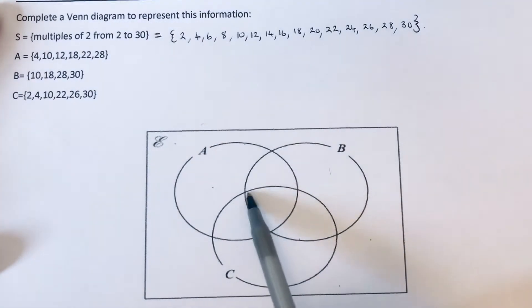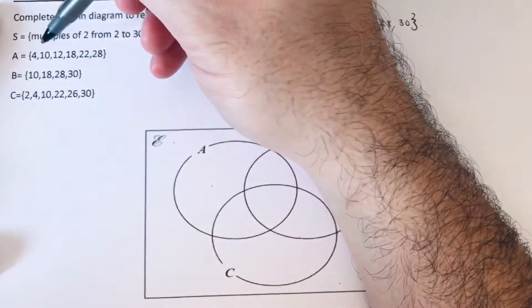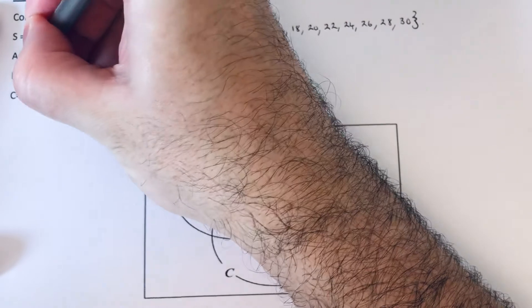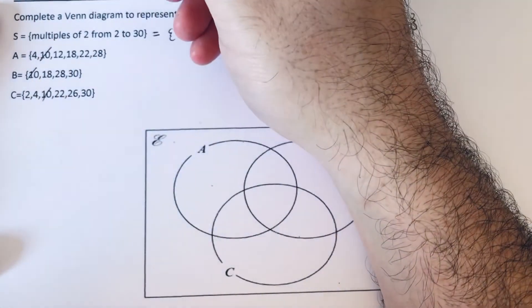So these are the numbers which are in sets A, B, and C. So we're looking for numbers in all three sets. We've definitely got the number 10 in all three sets, and I think that is it. So put the 10 in the center.